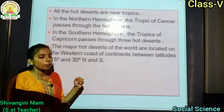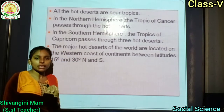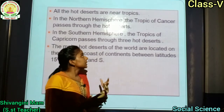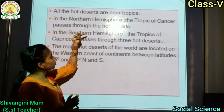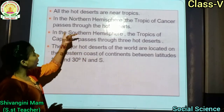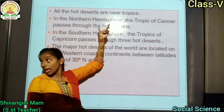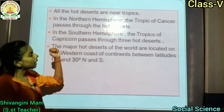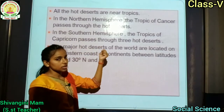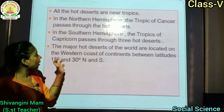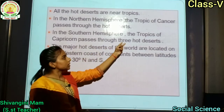All the hot deserts are near the tropics — जितने भी hot deserts हैं वो tropics के near हैं, जैसे Tropic of Cancer और Tropic of Capricorn. In the northern hemisphere, the Tropic of Cancer passes through the hot desert. In the southern hemisphere, the Tropic of Capricorn passes through three hot deserts.